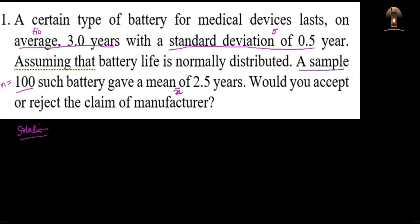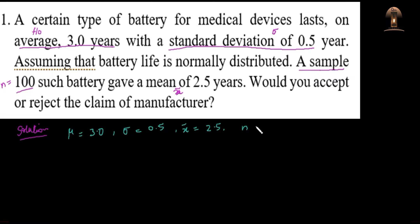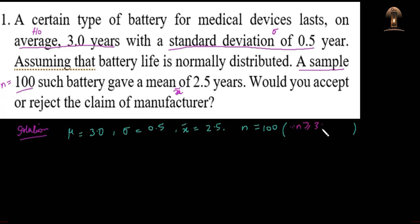Let us discuss this example. First we write our data: population mean is given as 3 years, sigma is given as 0.5 years, sample mean X-bar is 2.5 years, and sample size n equals 100. It is noted that N is more than or equal to 30 — because 100 is greater than 30 — which means we will use the Z distribution for the test statistic in this problem.